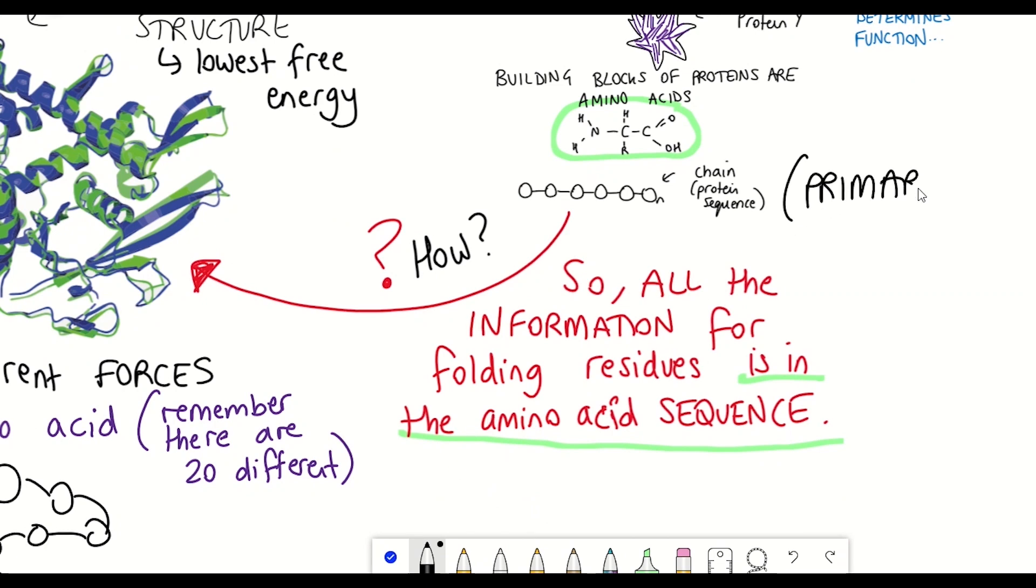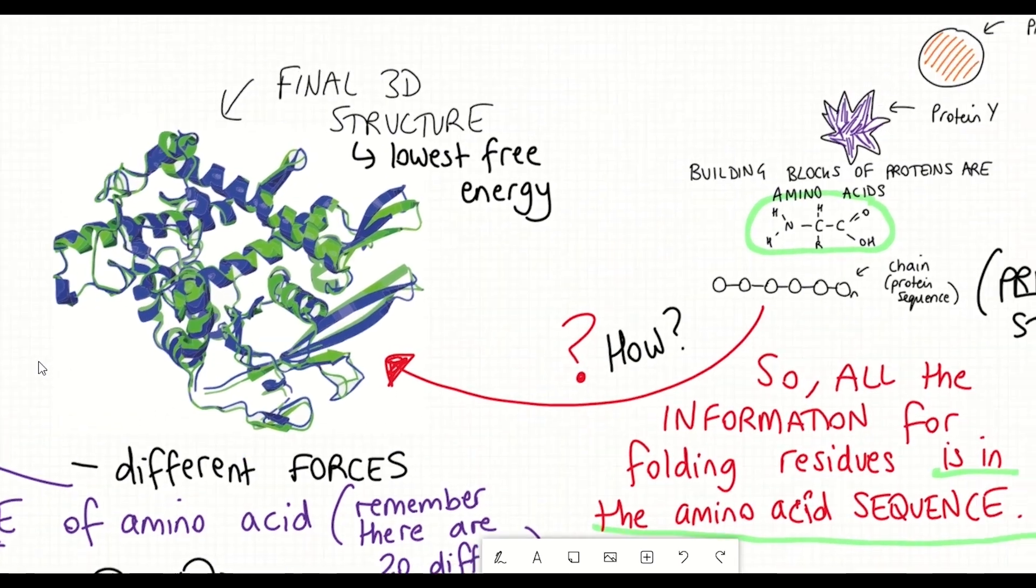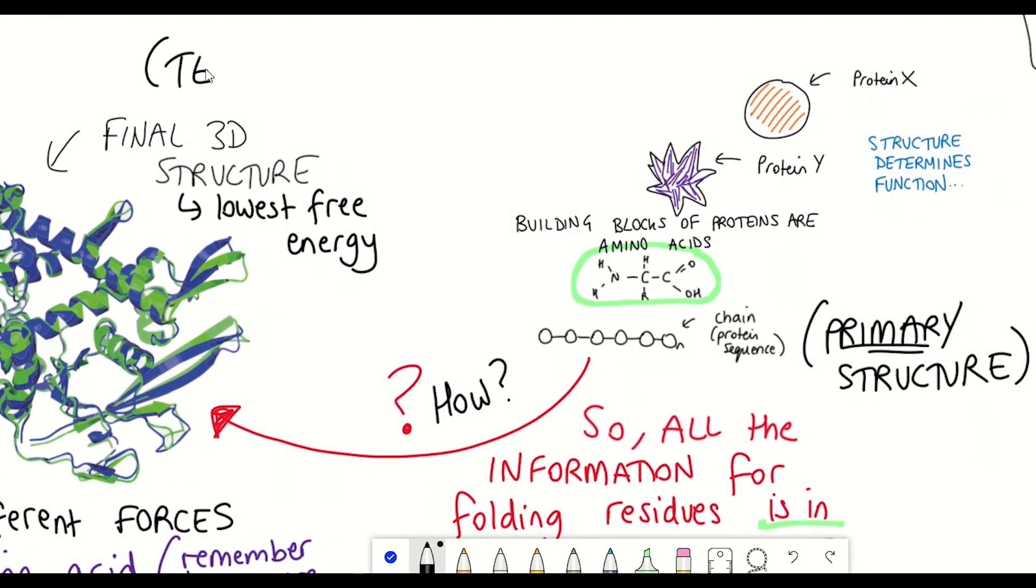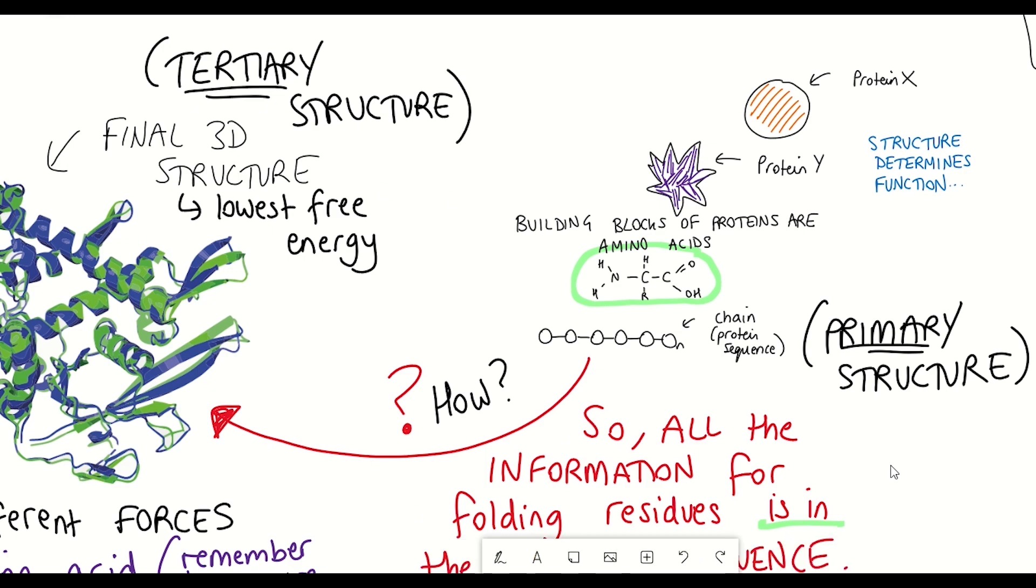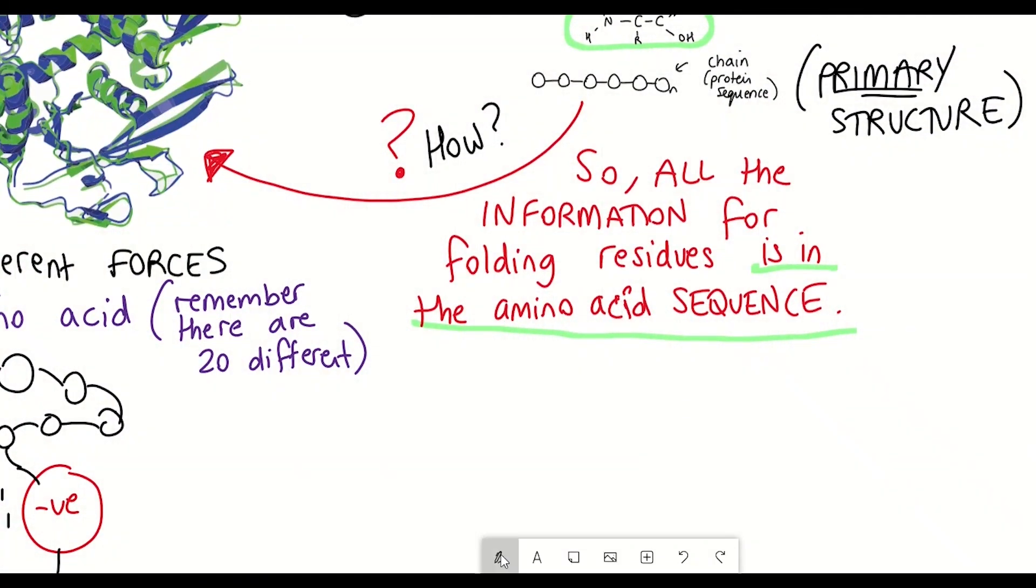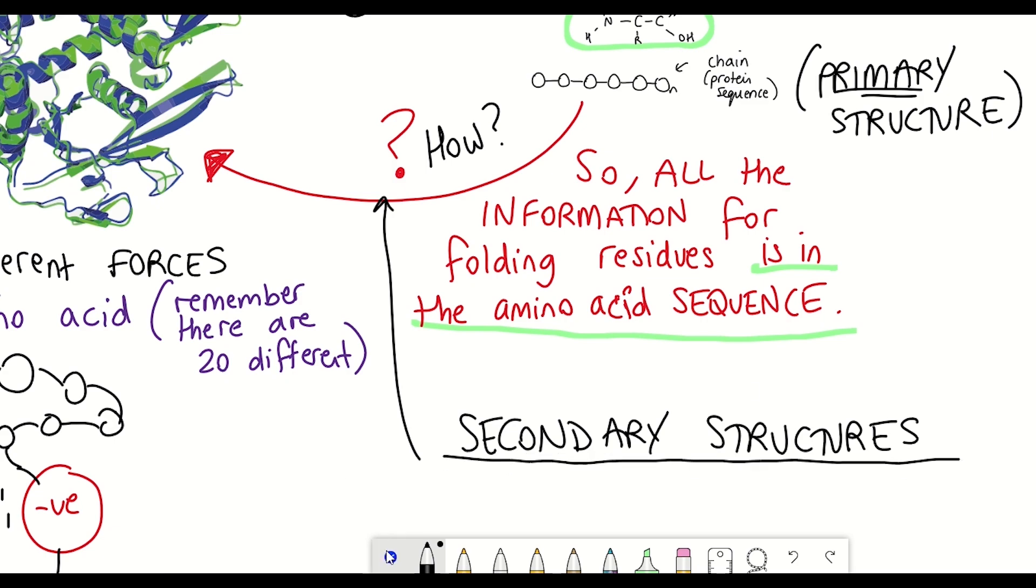Another thing that is worth mentioning is that we understand protein folding by using the different levels of protein organization. So starting with the amino acid sequence, that is often referred to as the primary structure. And this final structure here of the 3D folded protein is referred to as the tertiary structure. And so in between the primary structure, the sequence, and the tertiary structure, the final 3D structure of the protein are, you guessed it, secondary structures.